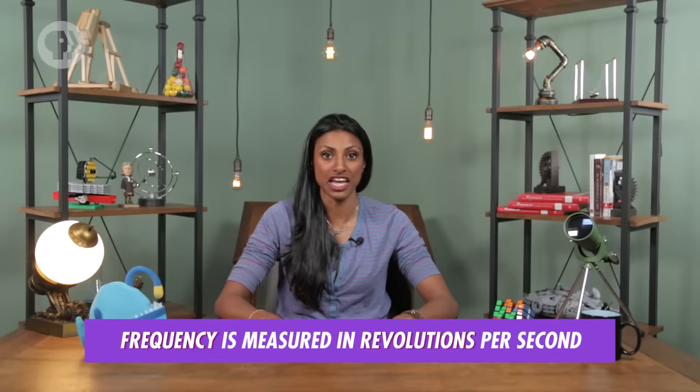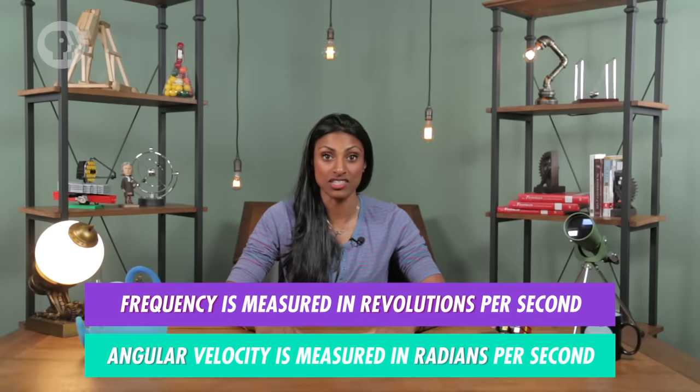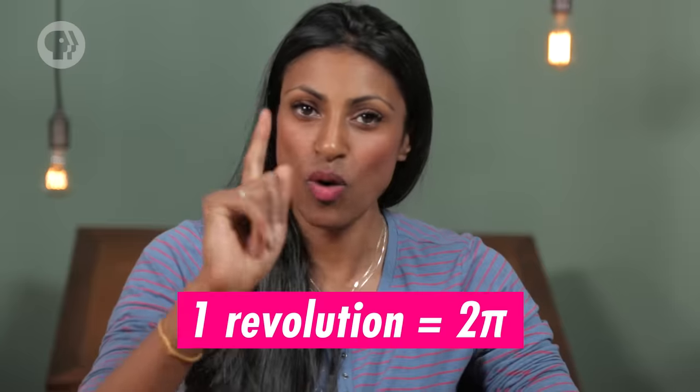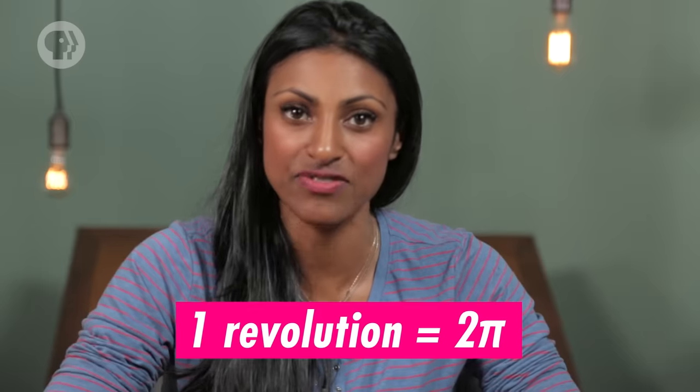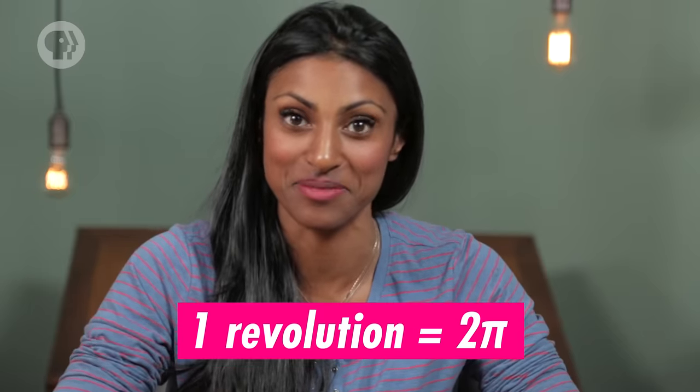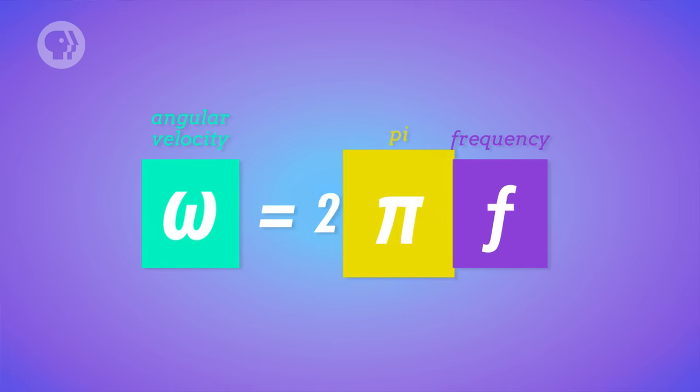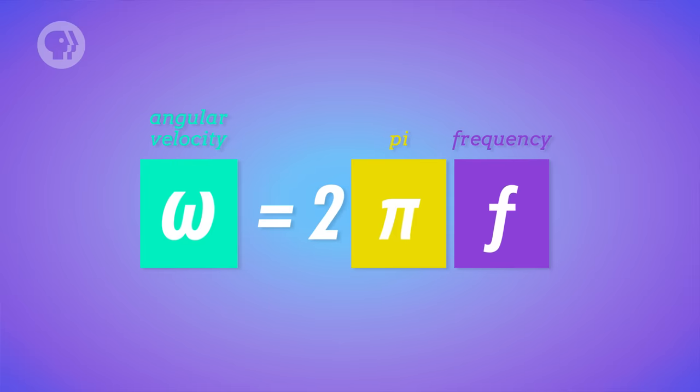Frequency is measured in rotations, or revolutions, per second, and angular velocity is measured in radians per second. And one revolution is equal to the circumference of the circle, 2 pi radians. So in order to convert from frequency to angular velocity, all you need to do is multiply the frequency by 2 pi.